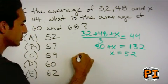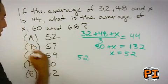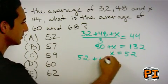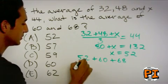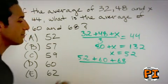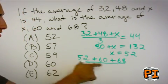x you know to be 52. Then you have 60 and 68. It's a second average. You divide by the numbers that you have, which in this case are 3.